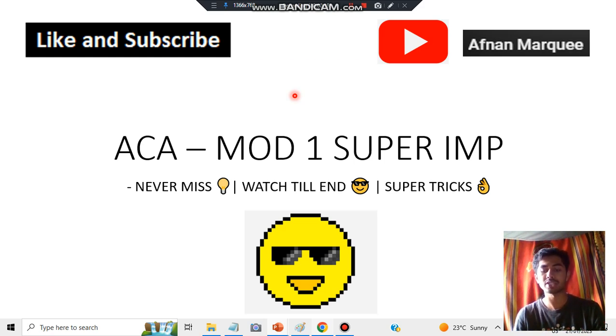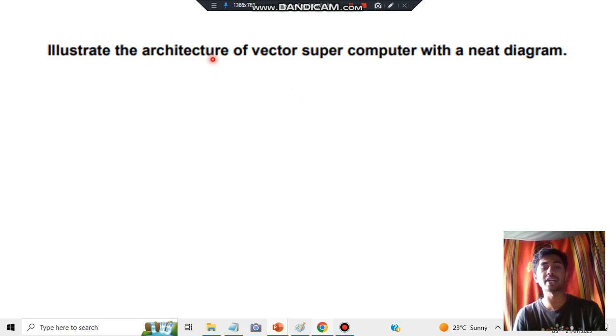The first question is: illustrate the architecture of vector supercomputer with a neat diagram. Here you have to draw the architecture and then explain what is vector supercomputer. Seeing the diagram, you have to explain. The main concept in vector supercomputer is the hardware of it. You have to draw the vector diagram for the hardware and explain what's happening, what components are present, and what functions are occurring. Let's have a look one by one.